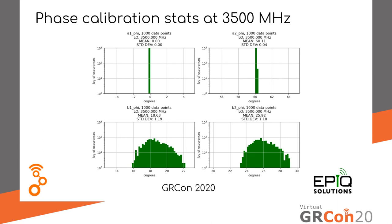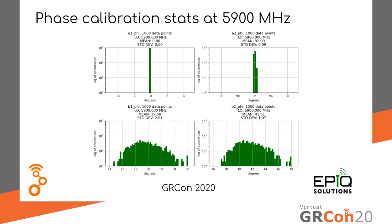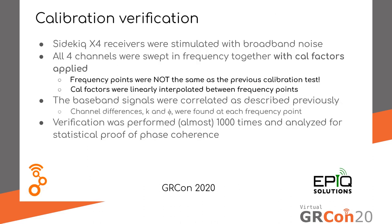As we go up in frequency, as seen on the previous plot, the spread gets a little higher because you have to take the frequency out of it. At the highest end it's about 1.97 degrees at 5,900 MHz.